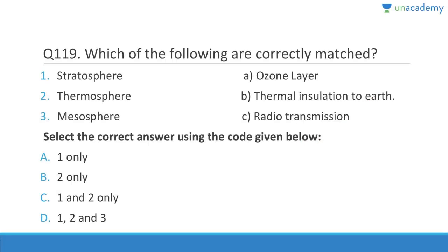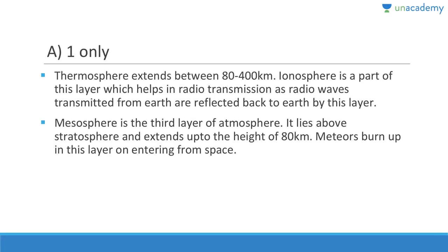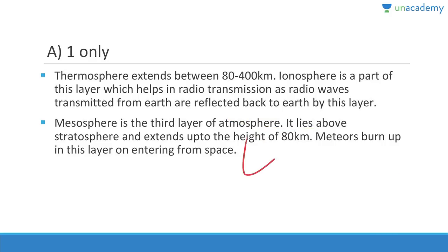Question 119: The stratosphere contains the ozone layer — correct. Thermosphere is NOT responsible for thermal insulation; that match is wrong. Mesosphere is NOT responsible for radio transmission — that is wrong. Thermosphere is responsible for radio transmission via the ionosphere. The mesosphere is the third layer, lying above the stratosphere up to 80 km, where meteors burn up.